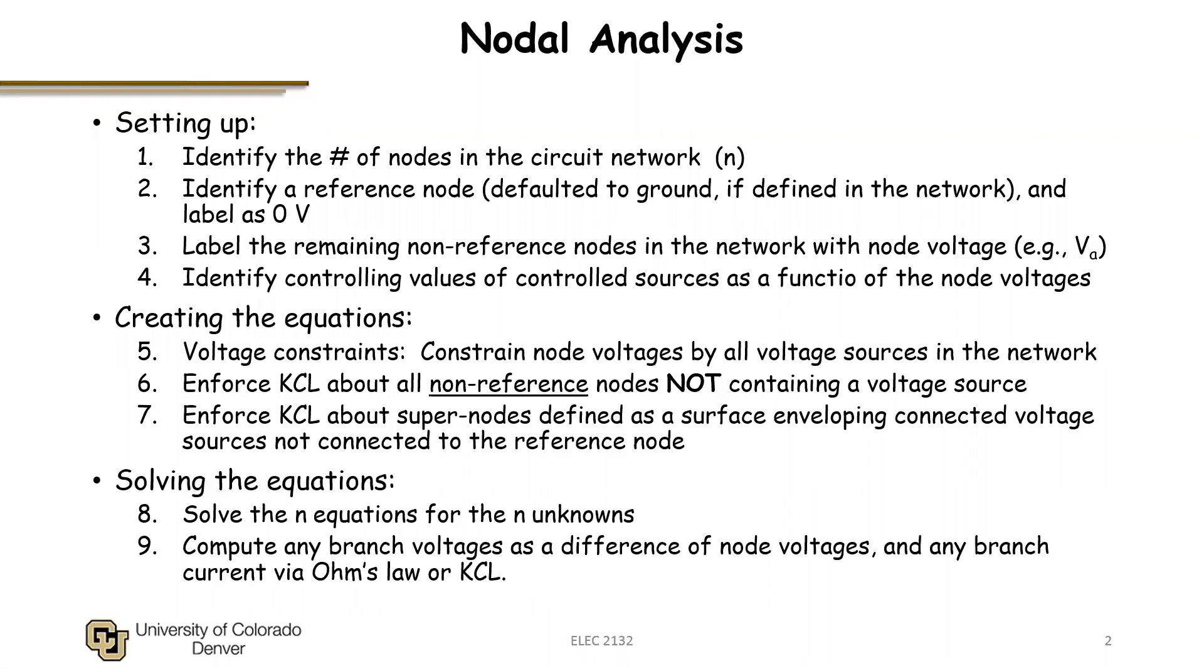After labeling the remaining non-reference nodes in the network, we would have a total of unknowns for which we would form the equations by first constraining the node voltages by any voltage sources in the networks, called voltage constraints.